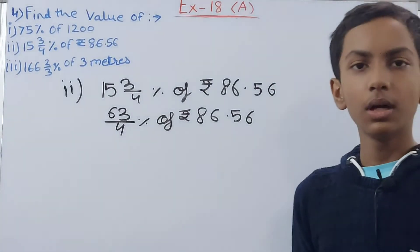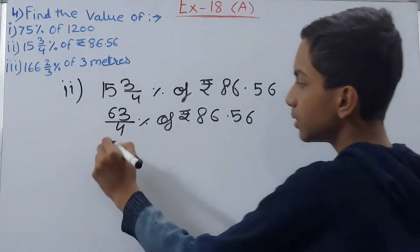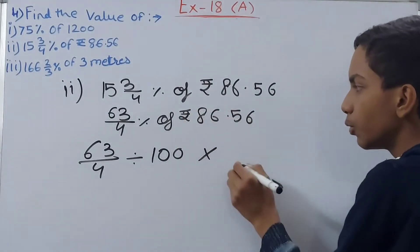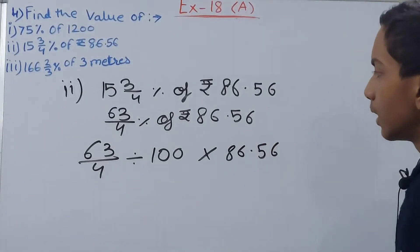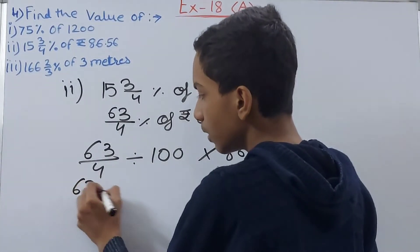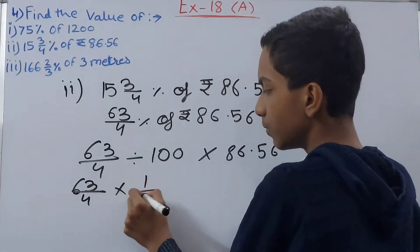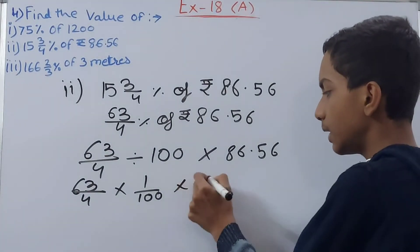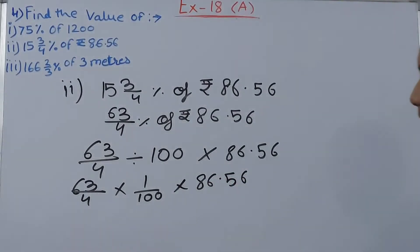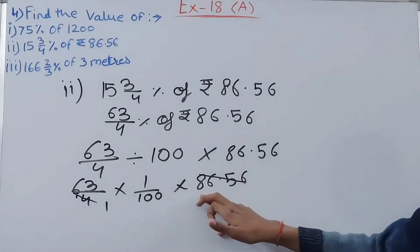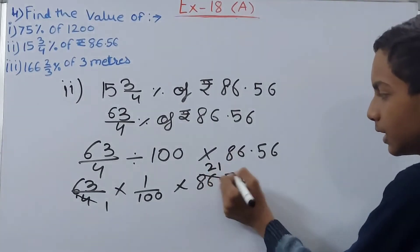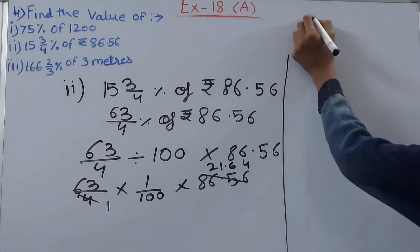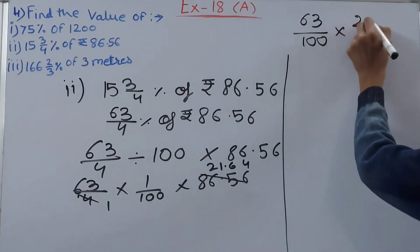Now this 63 upon 4 percent can be written as 63 upon 4 divided by 100. 'Of' becomes multiplication, and don't put the rupees sign for now because we are calculating. So it is 86.56. You can solve this: 63 upon 4, division changes to multiplication, and 100 becomes 100. Then again 86.56 as usual. Now can you cancel anything? I can cancel this 4: 1 and this decimal. So 8 goes 2 times 6, 1 times by 4, and then 2 here. So 25, 24, 6 times, and then 1 left, so 16 goes 4 times.